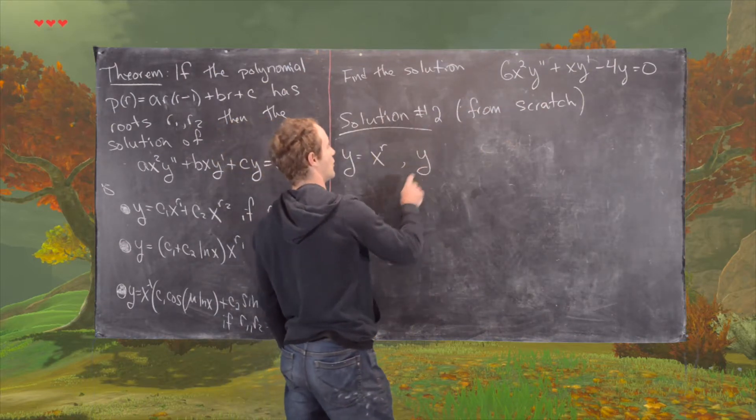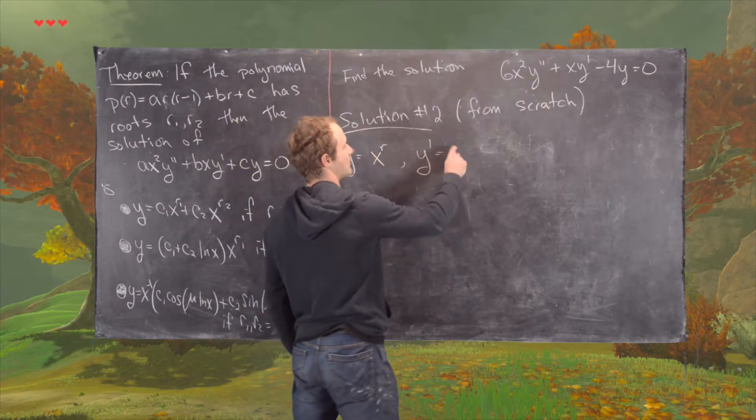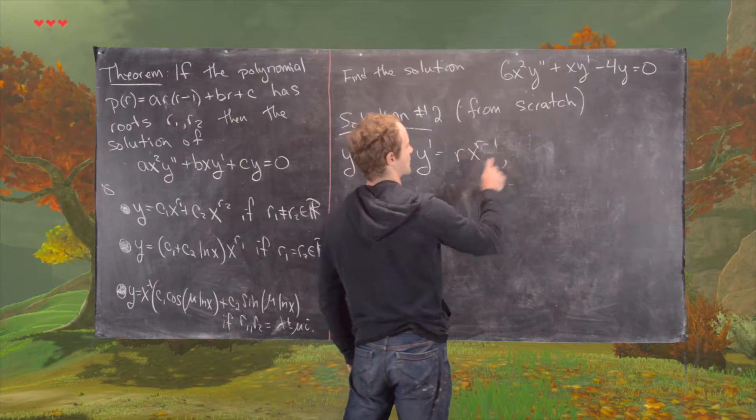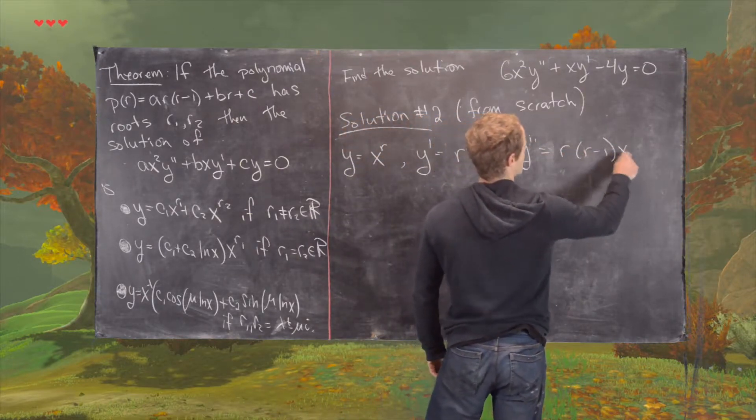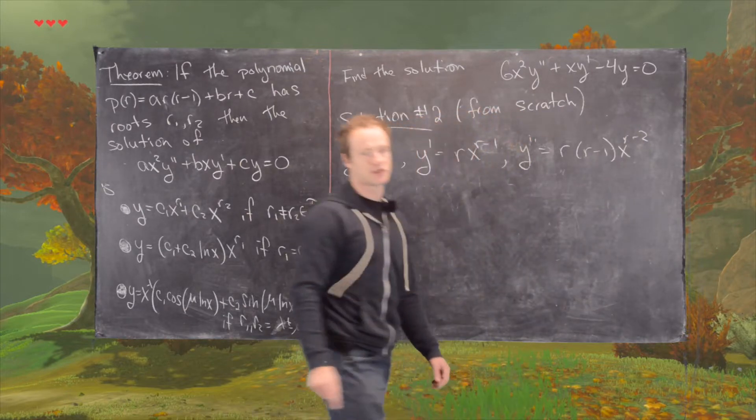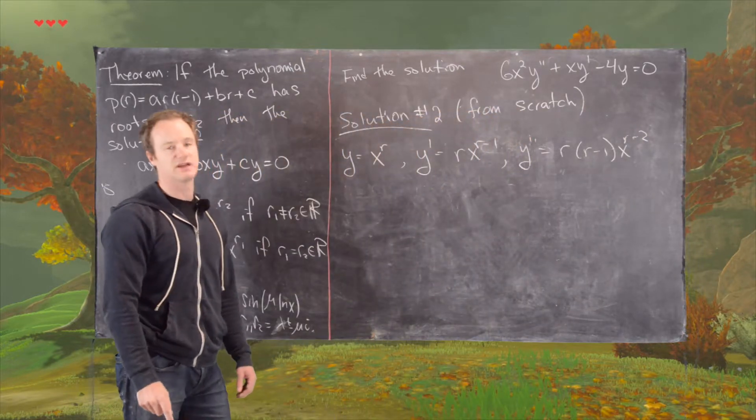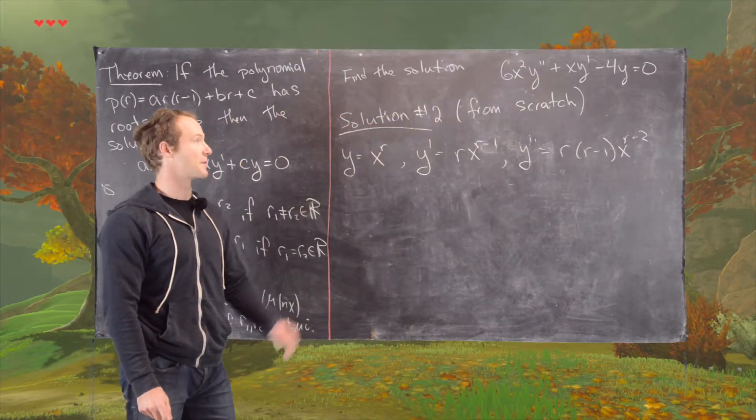And so, if Y is equal to that, then Y prime is equal to R X to the R minus 1, and Y double prime is R times R minus 1, X to the R minus 2, just using repeated applications of the product rule, or sorry, of the power rule.